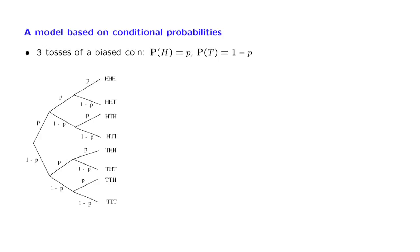We represent this probabilistic experiment in terms of a tree that shows us the different stages of the experiment. Each particular branch corresponds to a sequence of possible results in the different stages, and the leaves of this tree correspond to the possible outcomes. The branches are annotated by certain numbers.